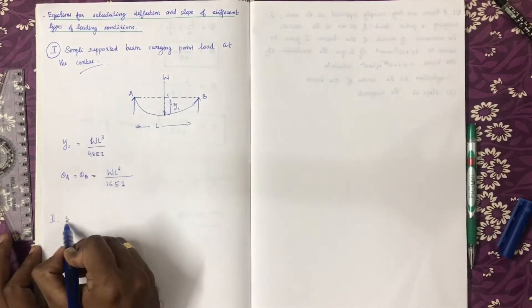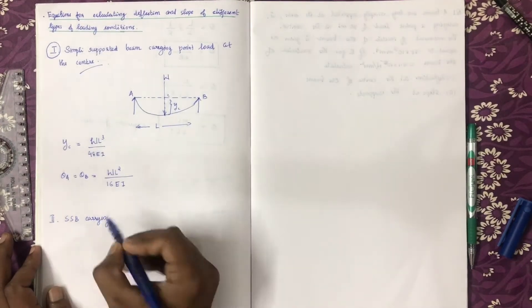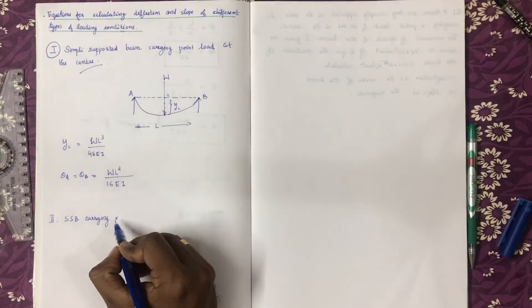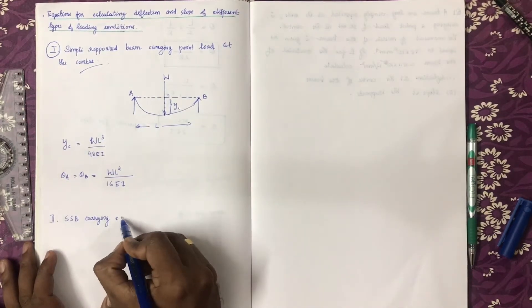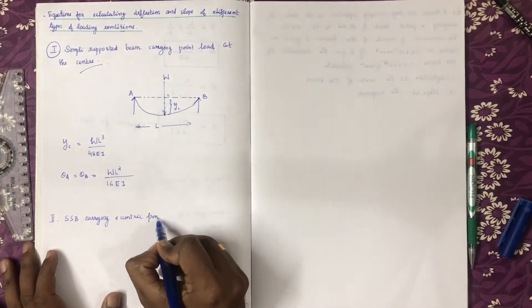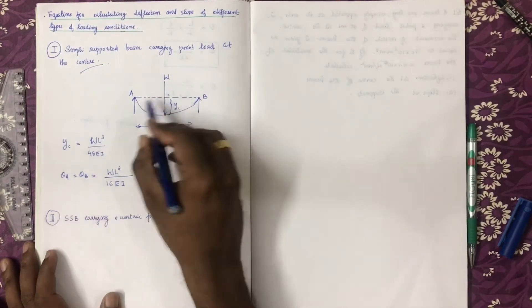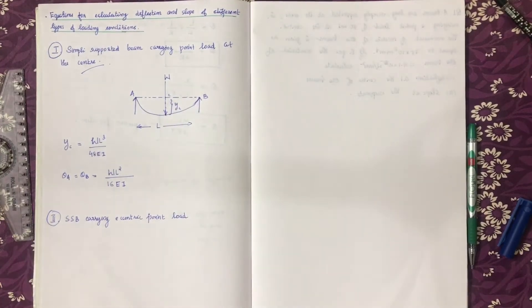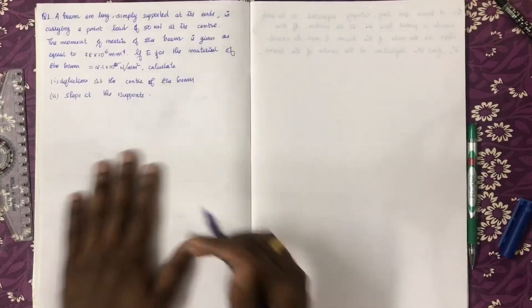The third type is a simply supported beam carrying eccentric loading — that is, an eccentric point load. We will now show you this beam.